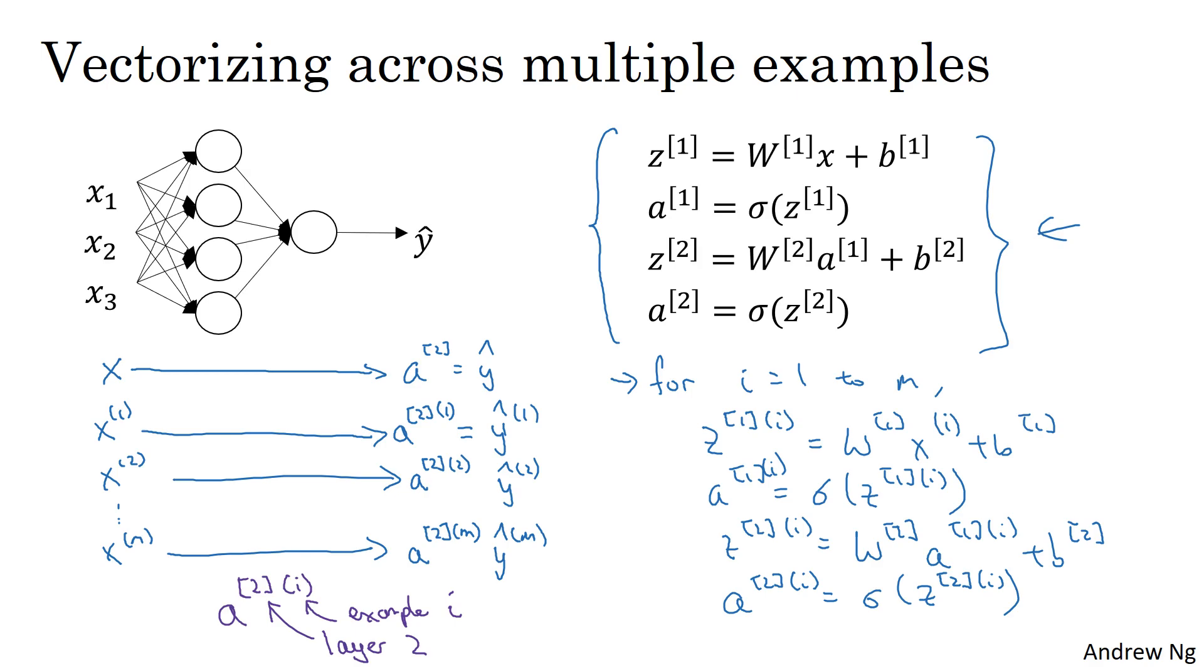And by the way, in case it seems like I'm getting a lot of nitty-gritty linear algebra, it turns out that being able to implement this correctly is important in the deep learning era. And we actually chose the notation very carefully for this class to make these vectorization steps as easy as possible. So I hope that going through this nitty-gritty will actually help you to more quickly get correct implementations of these algorithms working. All right, so let me just copy this whole block of code to the next slide, and then we'll see how to vectorize this.